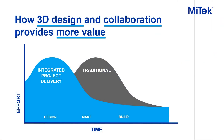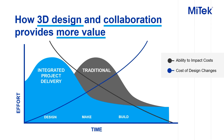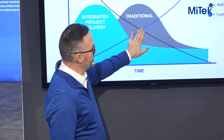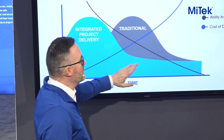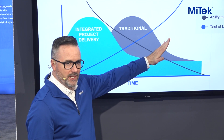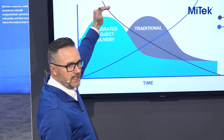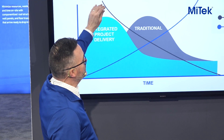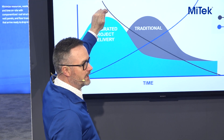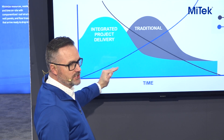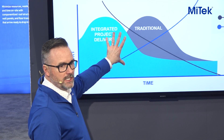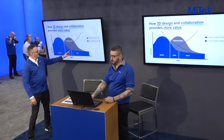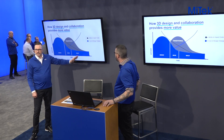Looking at different design methods, there are two lines showing that as we go through design into construction and into the field, our ability to impact cost decreases drastically while the cost of changes increases over time. We have a very high ability in the design phase to impact costs and make an optimized design where the cost of making changes is very low. With integrated project delivery, we want to do all we can in this early area and avoid making changes in the field.